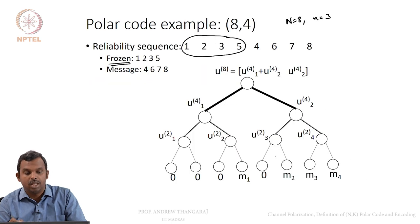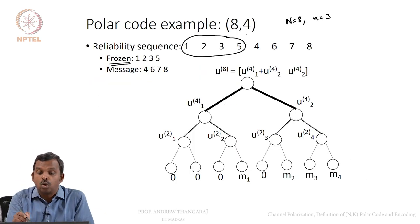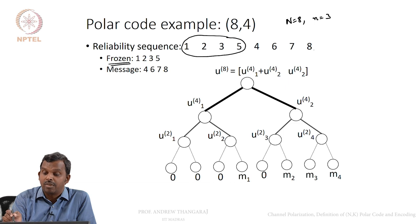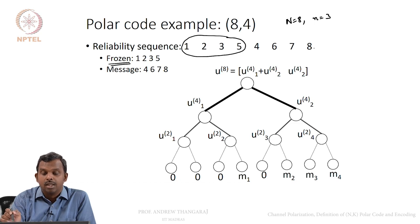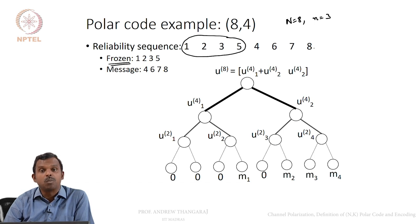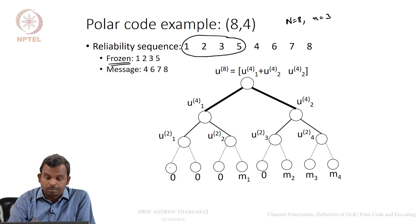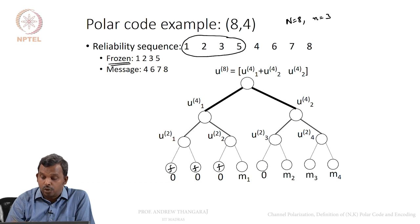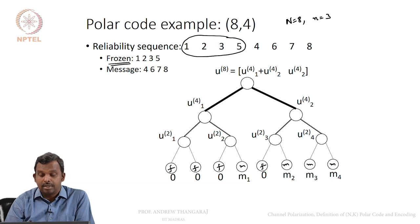The message positions are 4, 6, 7, 8. In the binary tree representation of the polar transform, the 1st, 2nd, 3rd, and 5th leaf nodes are frozen to 0 (marked F), and the remaining are message bits M1, M2, M3, M4 (marked M). Encoding proceeds: 0 and 0 give 0, 0; 0 and M1 give M1, M1; 0 and M2 give M2, M2; and M3, M4 give M3⊕M4, M4.